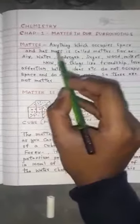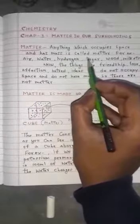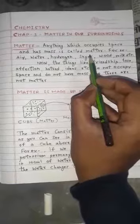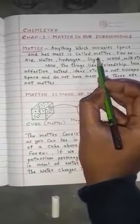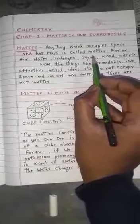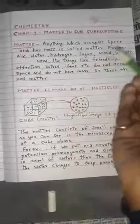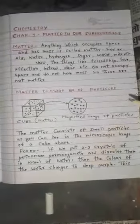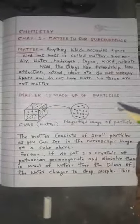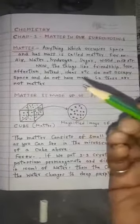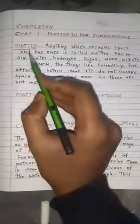Anything which occupies space and has mass is called matter. Anything — whatever the things you are seeing nearby you — which occupies space, and which has mass, meaning the material which is contained inside it, that is called mass. If both of these exist in any object, then that is called matter.